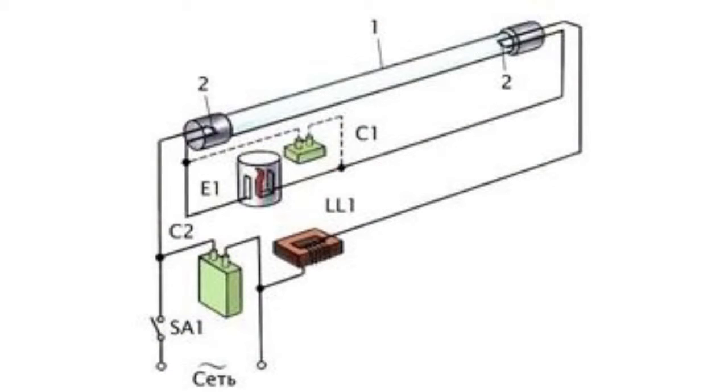The condenser within the starter circuit serves to suppress radar interference. The C2 condenser serves to increase the coefficient of efficiency.